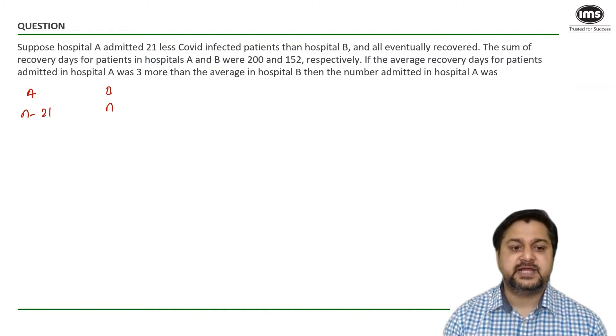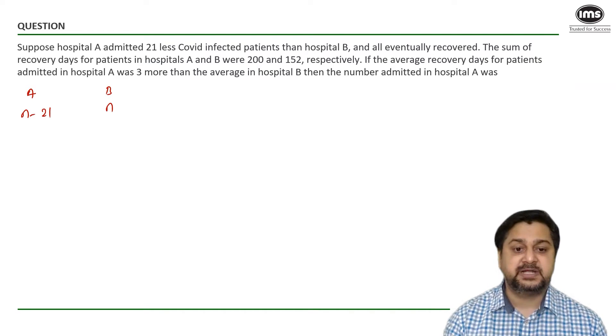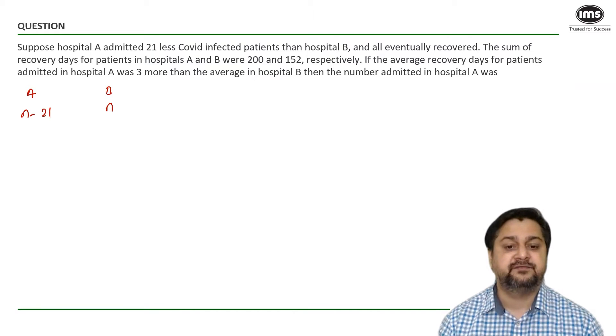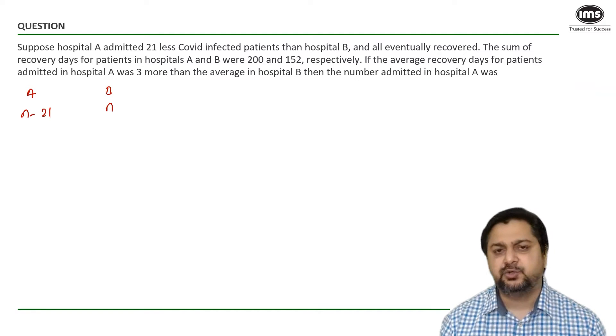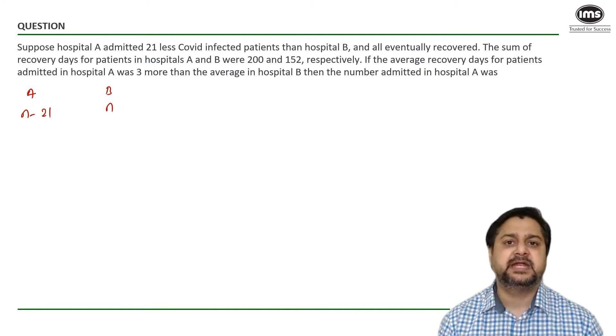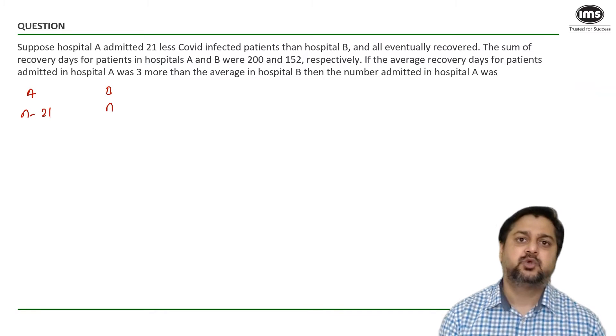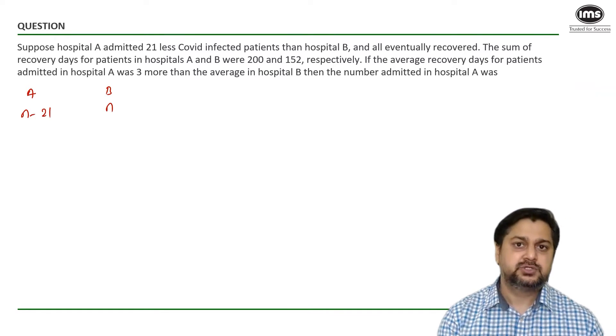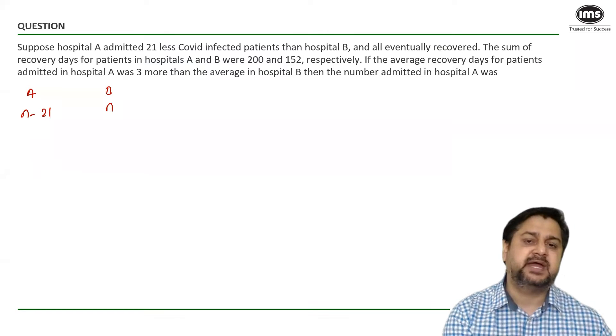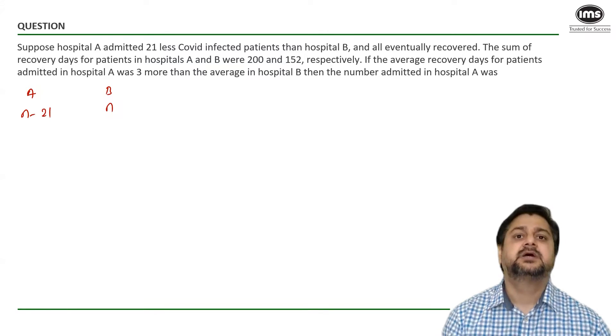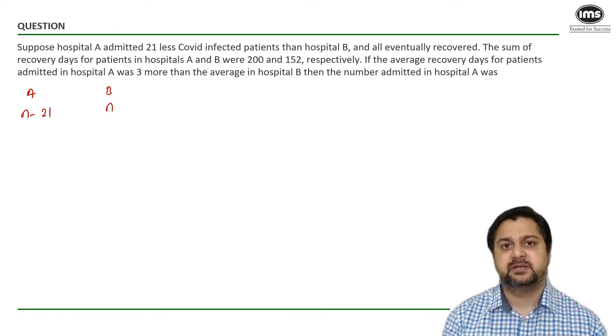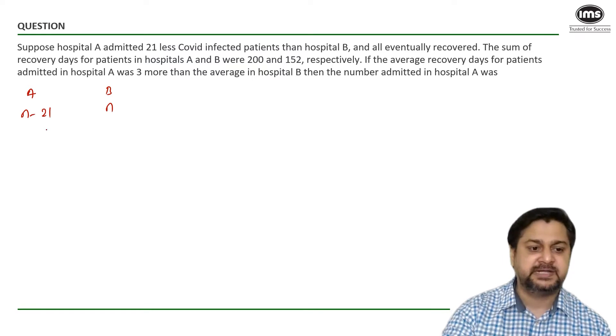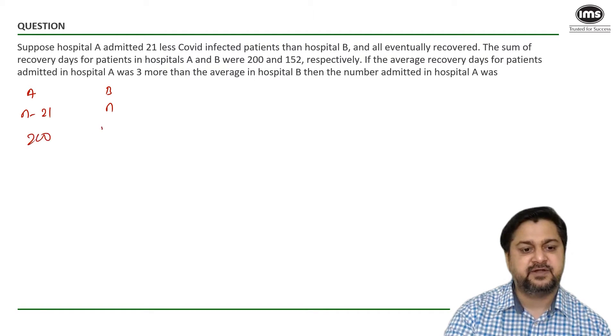The sum of the recovery days for patients in hospital A and B were 200 and 152 respectively. So what I get to know from this is that everybody might be getting different days to recover. So the sum of all the days taken by all the patients to recover in hospital A and hospital B are 200 and 152 respectively. So 200 days and 152 days.